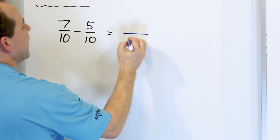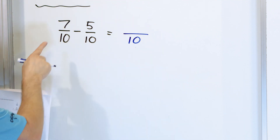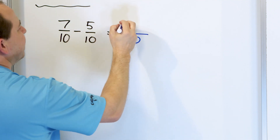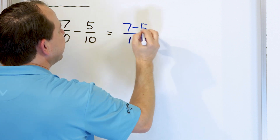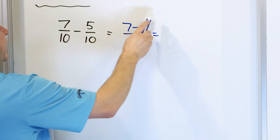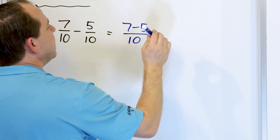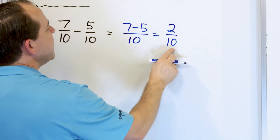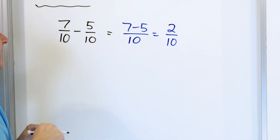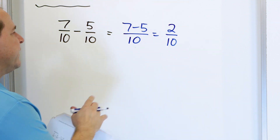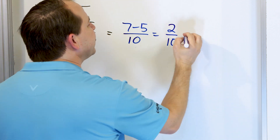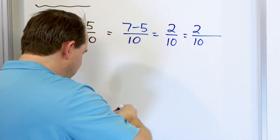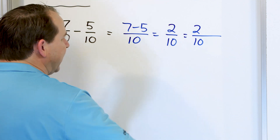So the 10 goes into the answer. In the numerator, 7 minus 5 is what we have. 7 minus 5 is 2, and then we have a 10. Now this is the answer. We could say that this is the answer. However, we can simplify this because we can divide the top and the bottom by 2.